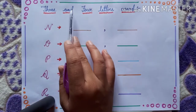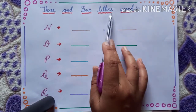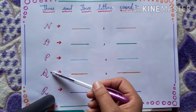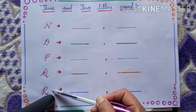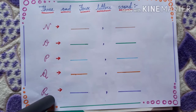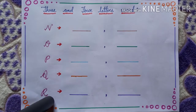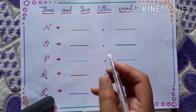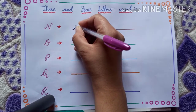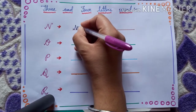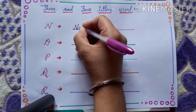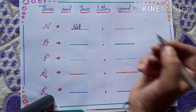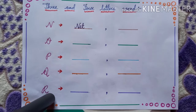Firstly, 3 and 4 letter words. Now N, O, P, Q, R. Firstly, we will start from N. 3 letter word from N is N, E, T. N, E, T — net.